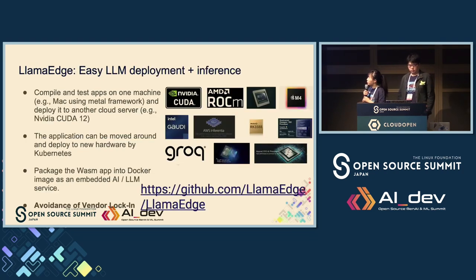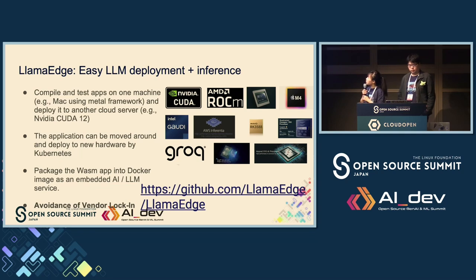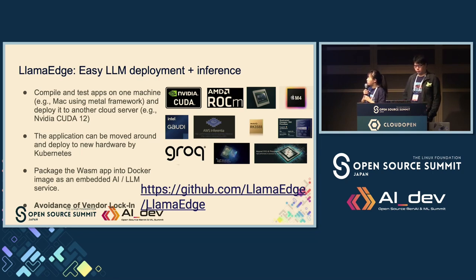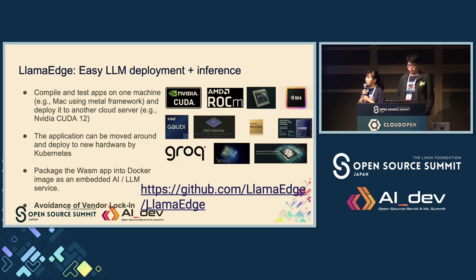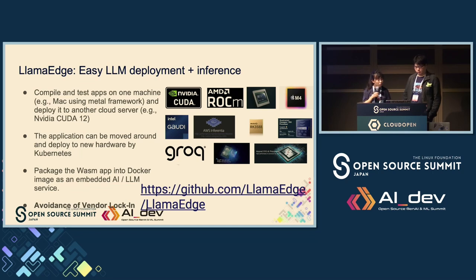LlamaEdge is built on top of the WasmEdge runtime. It is a set of large language model deployment and inference tools. It supports all these different infrastructure, chips, and GPUs. After you've written your app in the language you prefer — it can be Rust, C++, or other languages supported by WebAssembly — you compile it into WebAssembly. It can be moved around and deployed to new hardware, managed by Kubernetes, or packaged as a Docker image and used as an embedded AI or LLM service.